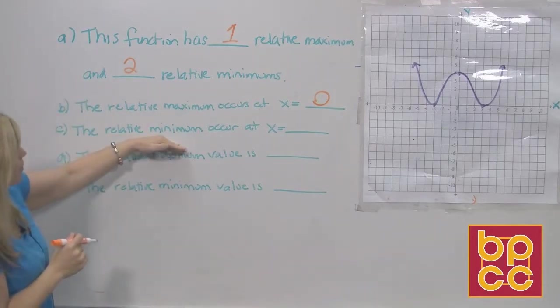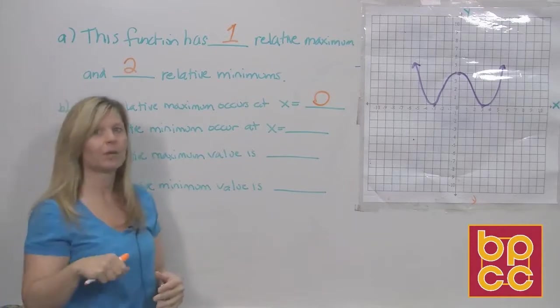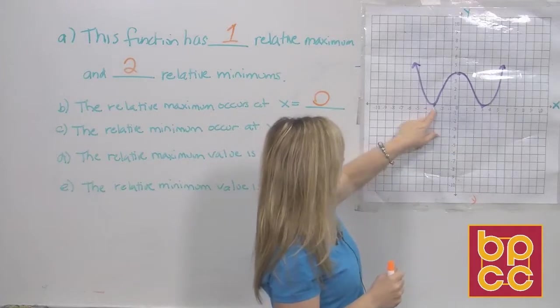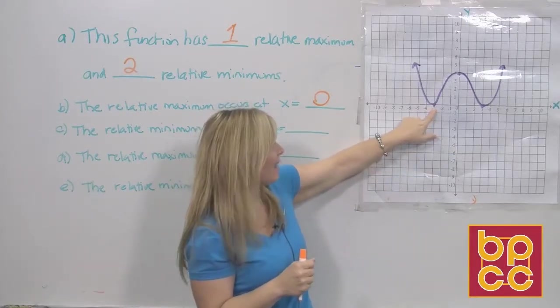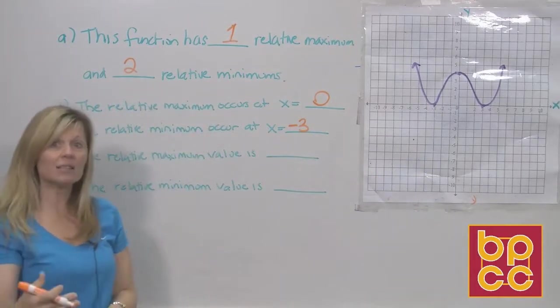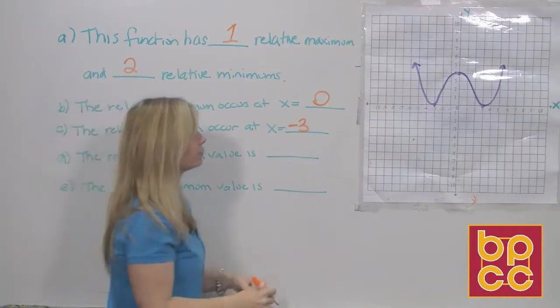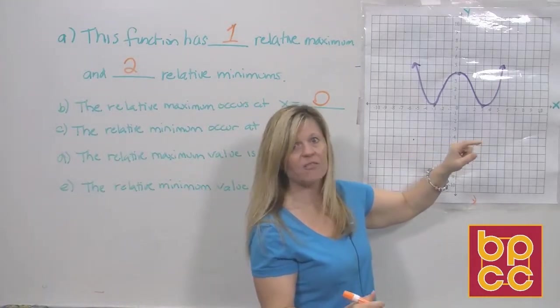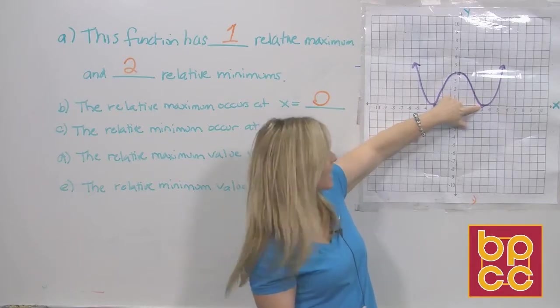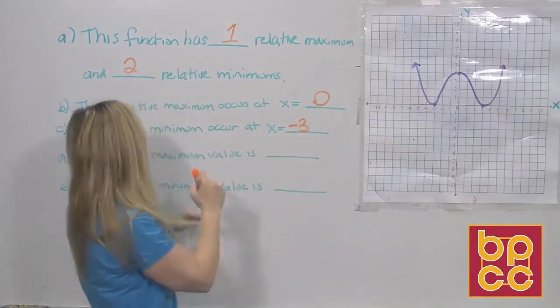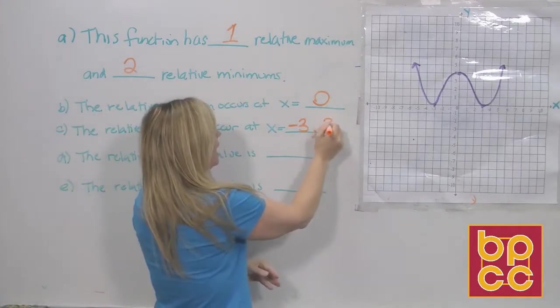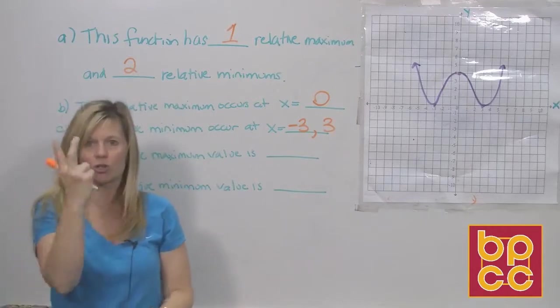Now, the relative minimums. There were two of them. Again, we want to know their x values. We're going to go to the first one, which is here. Put our finger on that point. And that x value is at negative three. Now, we have another low point, another relative minimum. And its x value is at a different value. Its x value is at x is positive three. So we would say the relative minimum values occur at x is negative three and x is positive three, because there's two of them.